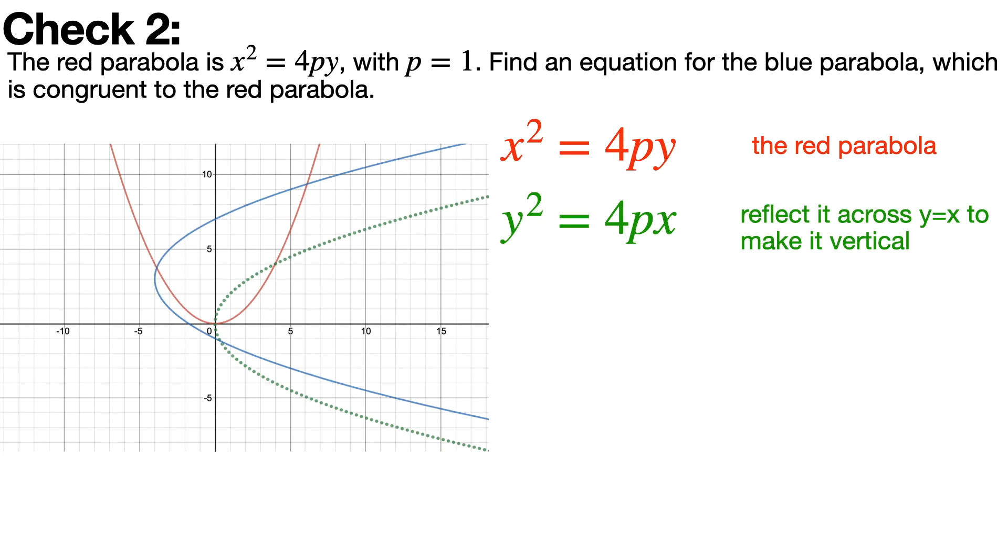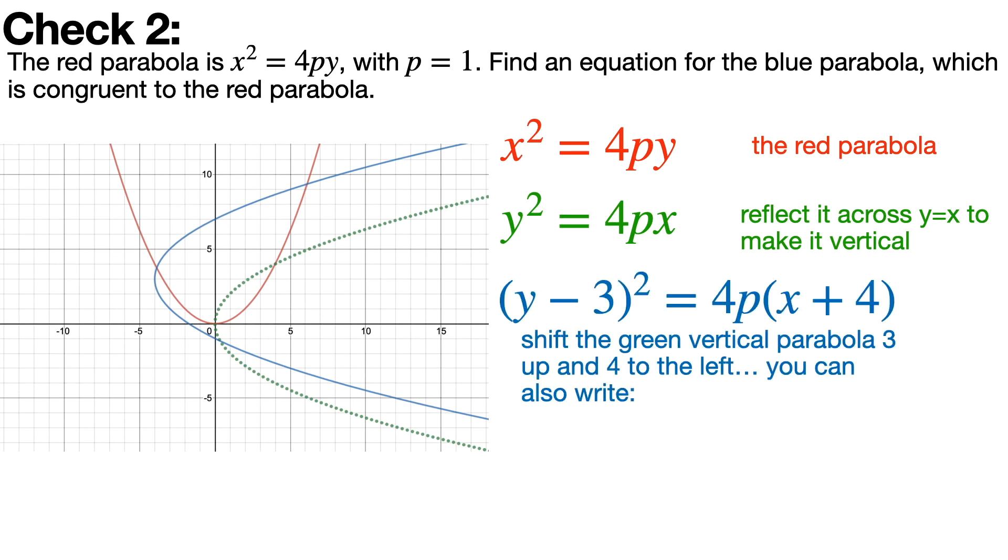We're moving it by moving it to the left and up, 4 units to the left, 3 units up. So we replace y with (y-3), moving it up, and replace x with (x+4), moving it to the left. And because p is 1, we could also plug that in and simplify it a little bit. And that's the equation of the blue parabola that we have at the end.